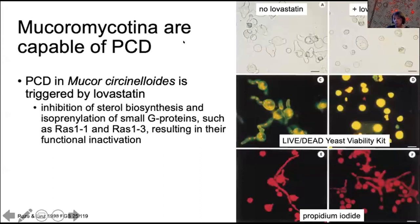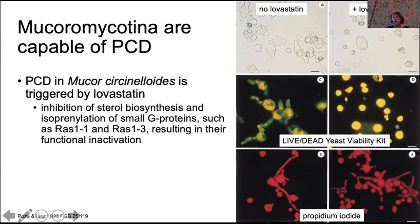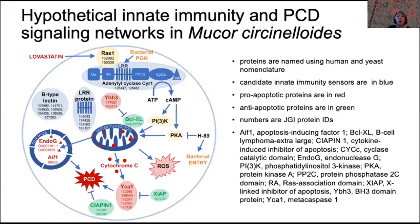Mucoromycotina are capable of programmed cell death. In fact, mucoromycotina was one of the first fungi where programmed cell death was reported, caused by lovastatin, an anti-cholesterol drug. Here are germinating spores of mucoromycotina germinating without and with lovastatin, and hopefully you can see clear differences in cellular appearance and nuclear fragmentation in propidium iodide in the live-dead viability assay.